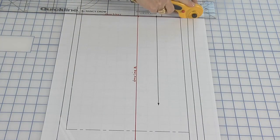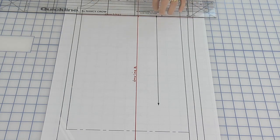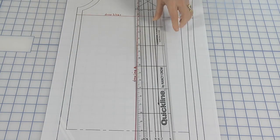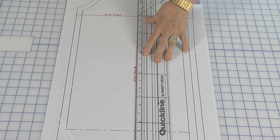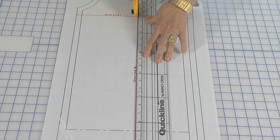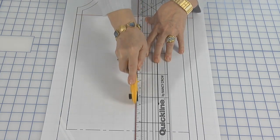We're going to cut from the center front into the vertical line to the bust point, and then we're going to cut the vertical from the bust point to the hem.